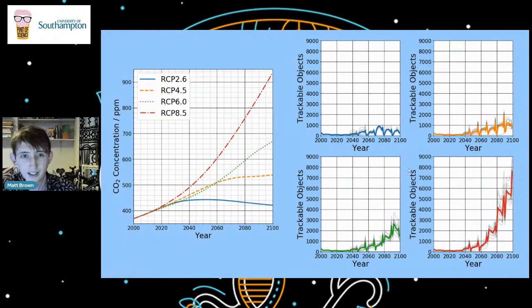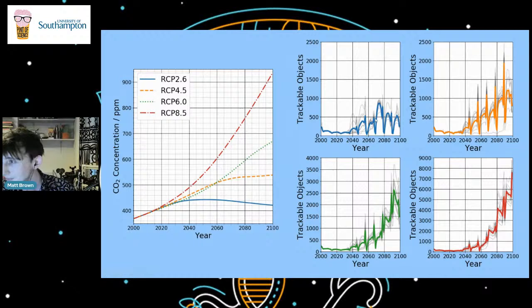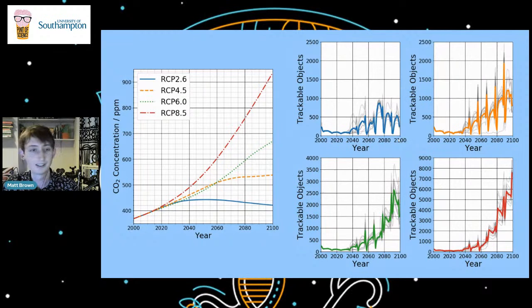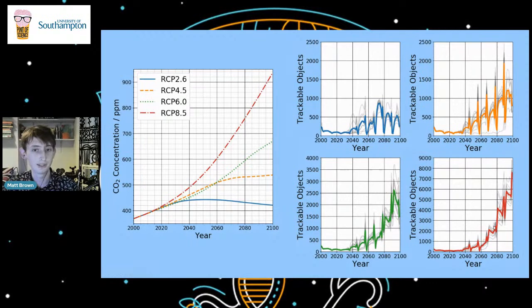Zooming in on the two lower CO₂ scenarios, we can see a peak-and-trough pattern every 11 years or so — that's the solar activity cycle. The sun puts out more energy every 11 years, which heats up the atmosphere, increases its density, and removes a lot of space debris. Then as the sun puts out less energy, debris builds up again. Interestingly, as we put more CO₂ into the atmosphere, we start losing that 11-year cycle — the peaks and troughs start disappearing, which is why you get a sudden ramp-up in the amount of debris.